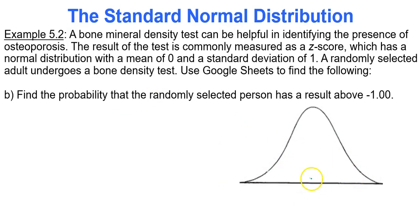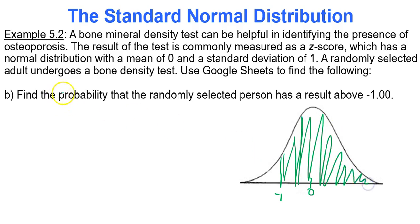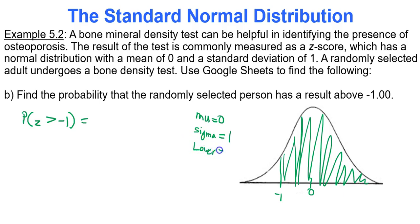Now find the probability a result is above negative 1. Shade your curve as before — looking for P(z > -1), which is area to the right. In Google Sheets, mean is 0, standard deviation is 1 (always for z-scores). Your lower bound is negative 1 (shading starts there), and upper bound is positive infinity — use 999999. Type these four values into your Google Sheets spreadsheet and you get 0.8413.